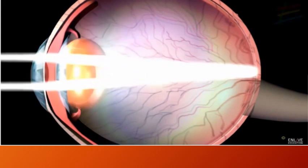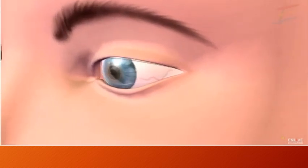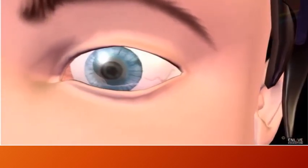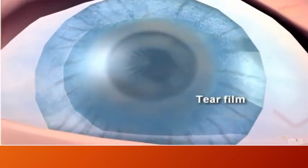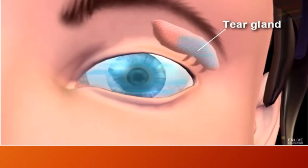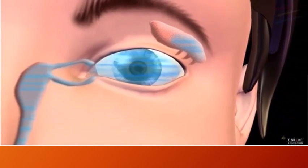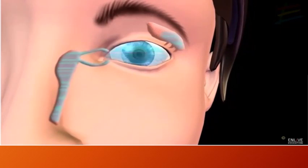Continual adjustment of the pupil and lens regulates the entry and focusing of light. Every blink helps our eye's natural defense system. The tear film retains moisture and maintains visual clarity. Tear glands secrete tear fluid, which contains important natural disinfectants to keep bacteria away. It drains through the tear duct into the nose after flushing and cleaning the entire eye surface, and thus the tear system washes away impurities to maintain eye health.